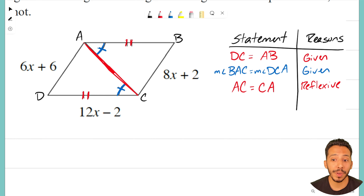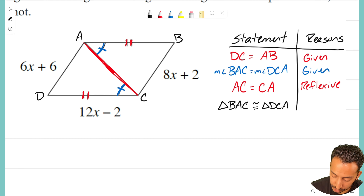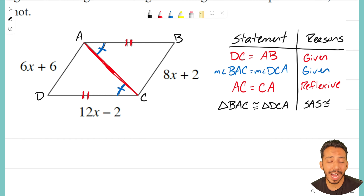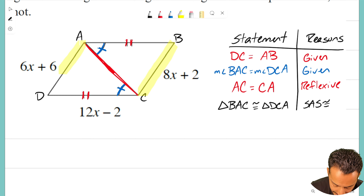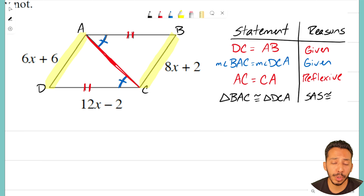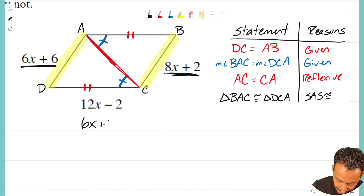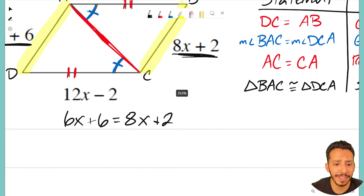Now with the Reflexive property established, we can say with certainty that triangle BAC is congruent to triangle DCA. The reason is Side-Angle-Side congruency. Now that they are congruent, I can solve for x. I know that sides BC and AD are equal — they're given as 6x + 6 and 8x + 2. Since the triangles are congruent, those sides must be equal, so: 6x + 6 = 8x + 2.